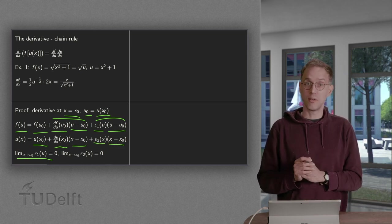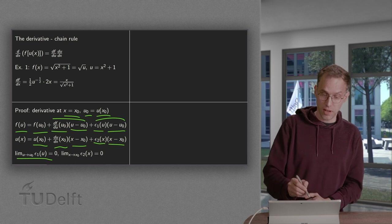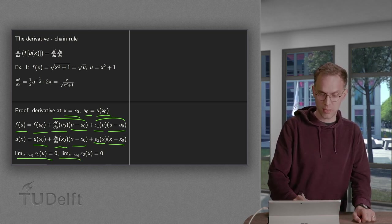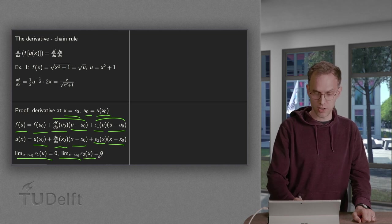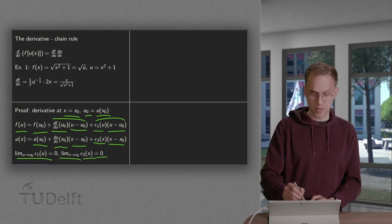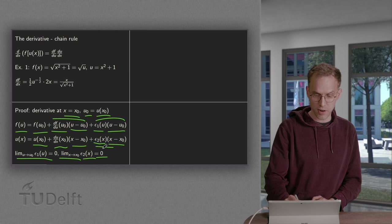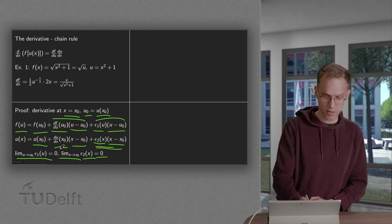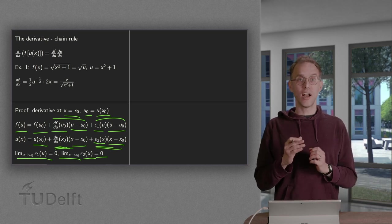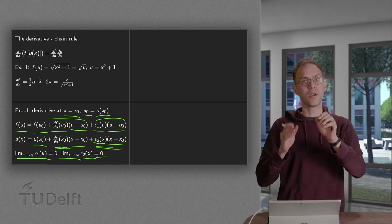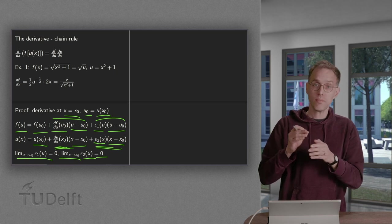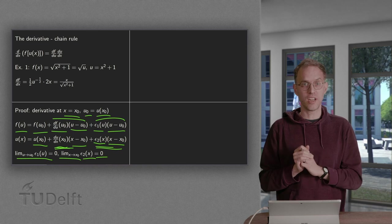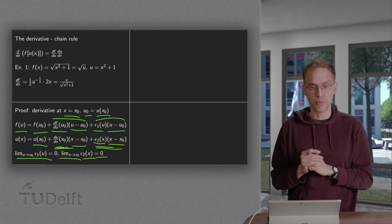What's important is that this remainder goes to 0 if x approaches x0. So if x goes to x0, epsilon 2 of x equals 0 in this limit. So this means also here that this part goes fast to 0 if x approaches x0 than this part. It basically means that around the point x0 you can approximate your function by its tangent line. So that's the idea of being differentiable there.